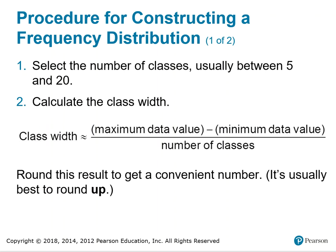The major steps for constructing a frequency distribution are: first, select the number of classes, usually between 5 and 20. Then calculate the class width, which is approximately the maximum data value minus the minimum data value divided by the number of desired classes. Round this result to get a convenient number for the class width — it's usually best to round up.